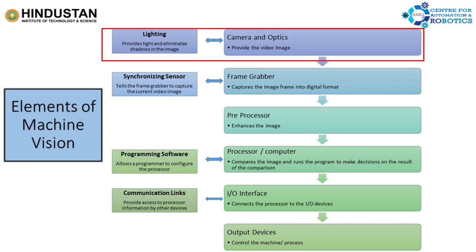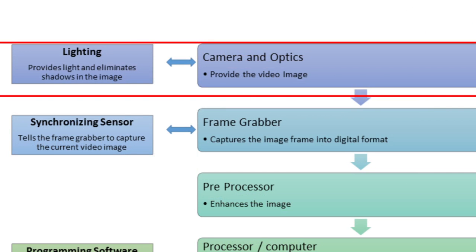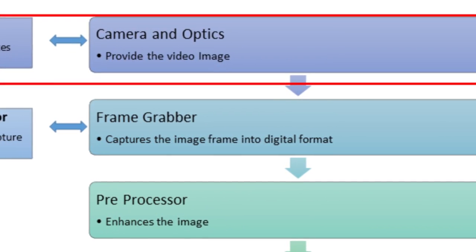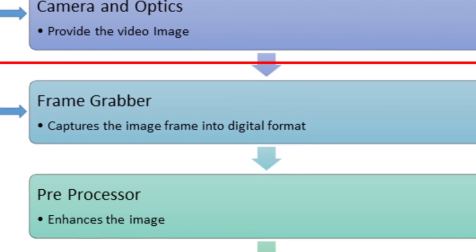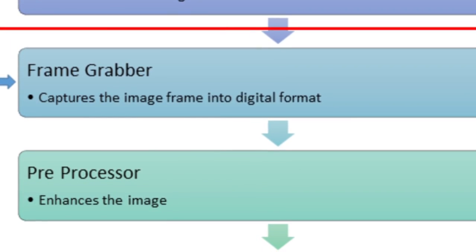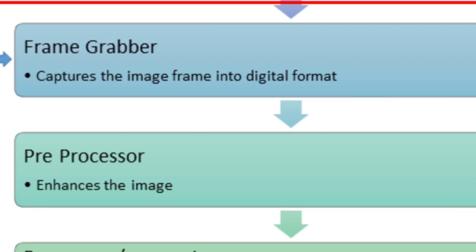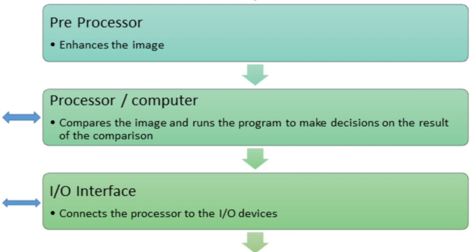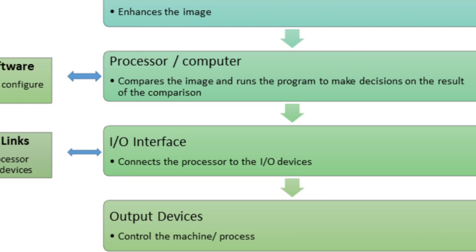This is the flow line. Elements of the machine vision system start with lighting; the camera and optics play a major role. A frame grabber grabs and stores the images in digital format. We then pre-process the image to enhance it and improve accuracy in decision making. The processor or computer helps in decision making. The IO interface connects the IO device with the processor, and in case you want to reject an object from the conveyor, the command is passed through the IO device. The output device — which could be a display — shows whether the component is accepted or not, and can be used for report generation.